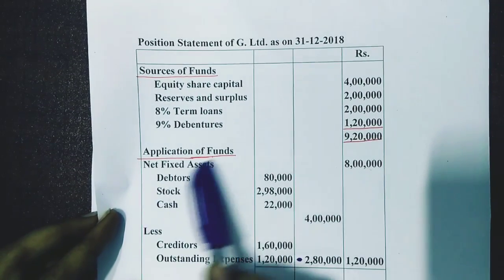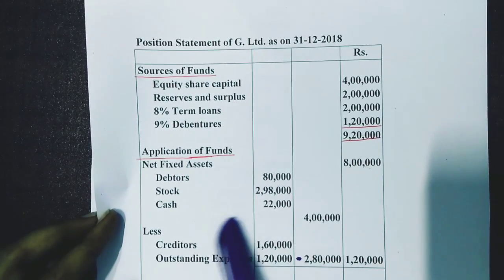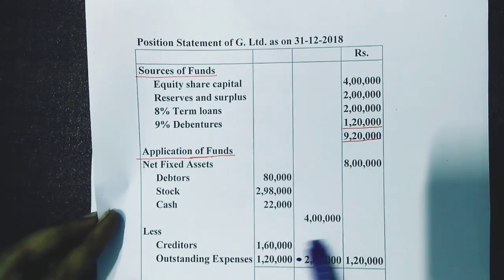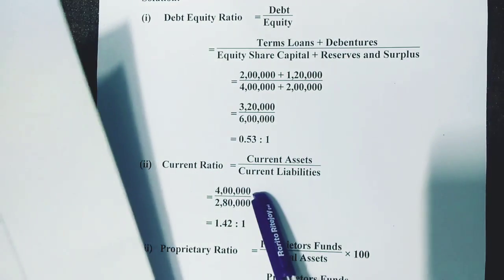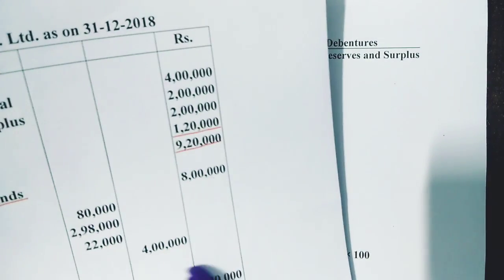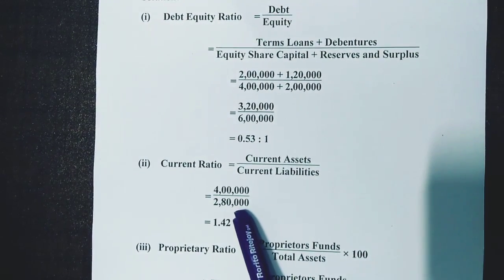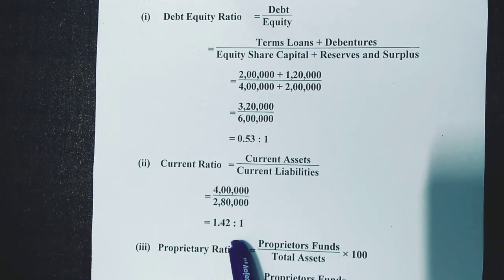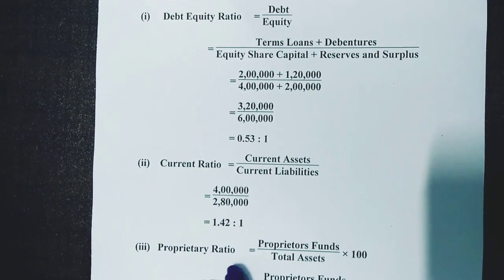All of these are your current assets, and creditors and outstanding expenses are your current liabilities. They have given you a total of current assets as well as current liabilities directly. So in current assets we write down the total of rupees 4 lakhs, and for current liabilities we have the total of rupees 2 lakh 80,000. So 4 lakhs divided by 2 lakh 80,000 gives 1.42 is to 1.